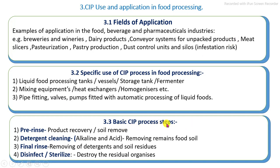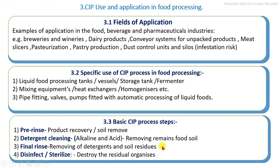The basic CIP process involves four main stages. The first is the pre-rinsing process, in which maximum recovery of food soil is carried out. The second is the detergent cleaning process, using alkaline and acid detergents to remove remaining food soil. The third stage is final rinsing to remove residual detergents and food soils. Finally, a disinfection or sterilization process is carried out to completely reduce the microbial load.